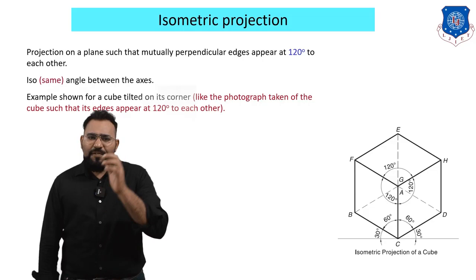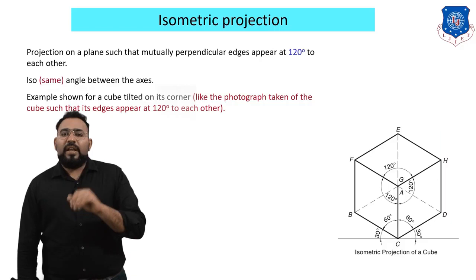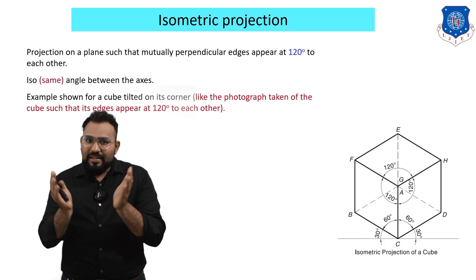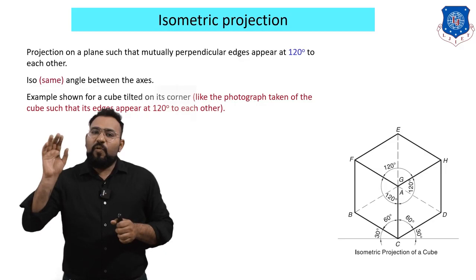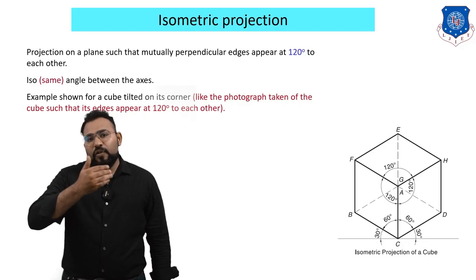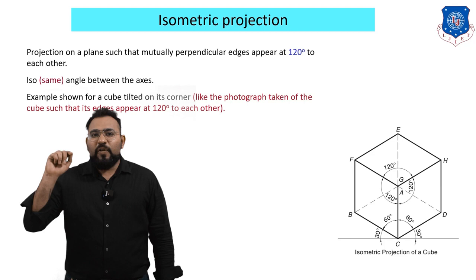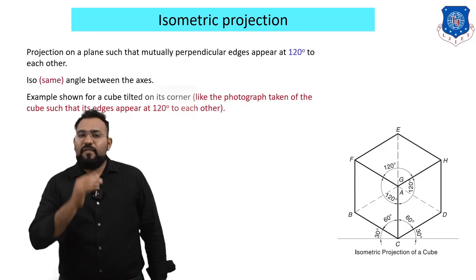Before we start, let me give you a brief introduction. In orthographic projection, we have a 3D object and we convert the 3D drawing views into 2D drawing views like front view, top view, and side view. So given a 3D object, you derive a 2D drawing — that means you derive the front view, top view, and side view of that particular object.